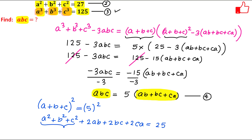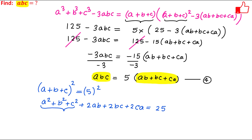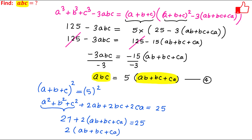Now a squared plus b squared plus c squared is given in equation 2, so this is 27. So we have 27 plus 2 times (ab plus bc plus ca) equals 25. From here, 2 times (ab plus bc plus ca) equals 25 minus 27, which is minus 2. So ab plus bc plus ca equals minus 1.